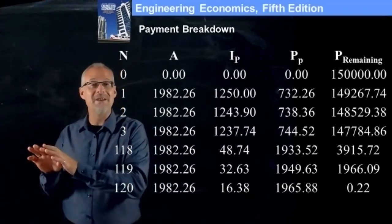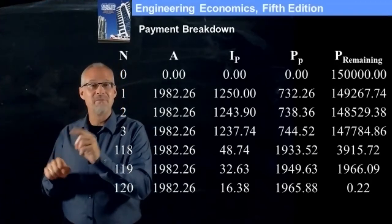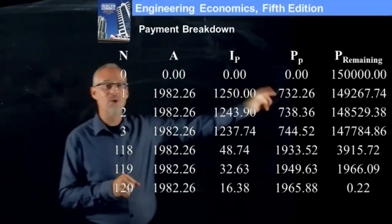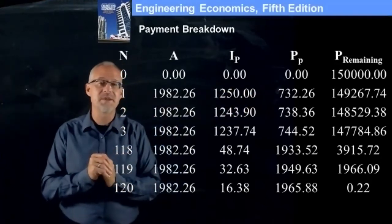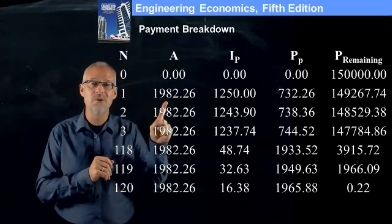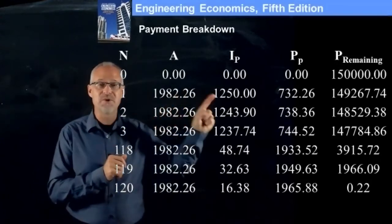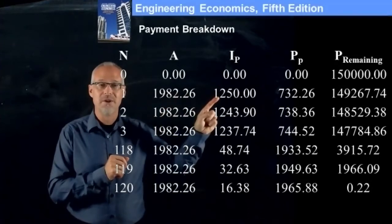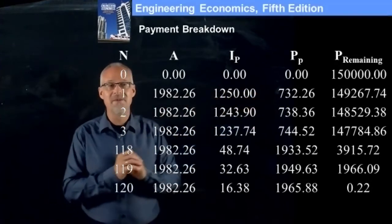So at the end of the first month, we can say you still owe $149,267.74. You made a payment of 1982. Interest of $1,250 was charged. So you really only paid down 732.